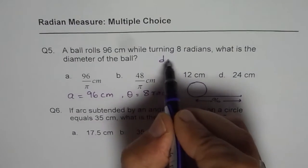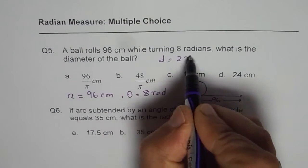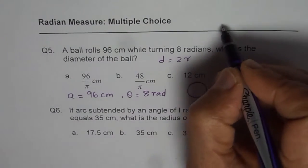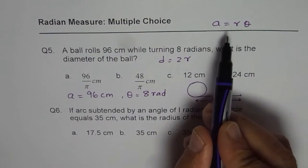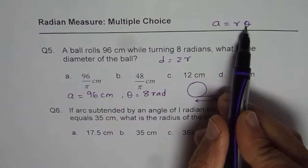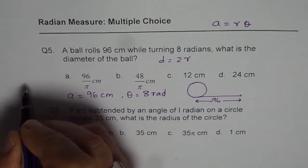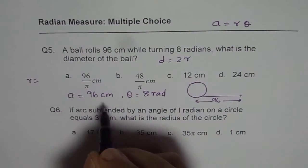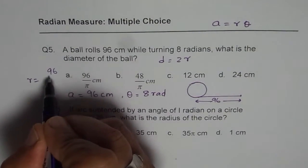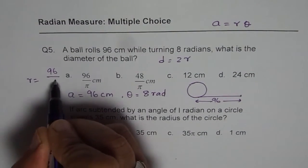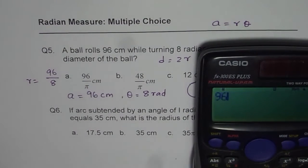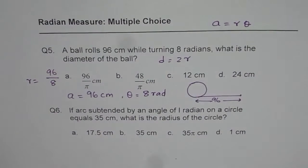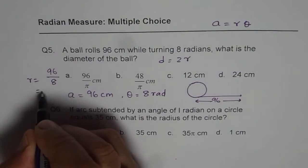Diameter is equal to 2 times the radius. We know the formula a equals r·theta, so we can find r as the ratio of a and theta. So r equals a divided by theta, which is 96 divided by 8. Dividing 96 by 8 gives us 12, so r equals 12.